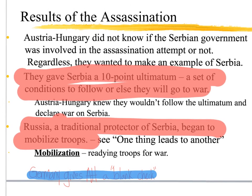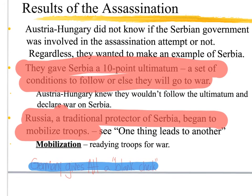Austria-Hungary is furious — they just lost the heir to the throne, assassinated by Serbians. So they want to make Serbia pay. They give Serbia a 10-point ultimatum: if you don't let us do these things, we're going to war with you. Austria-Hungary knew Serbia wouldn't follow all the ultimatums — they demanded access to all government documents to see if this was a government job, and Serbia said they're not going to give access to all their top-secret documents.